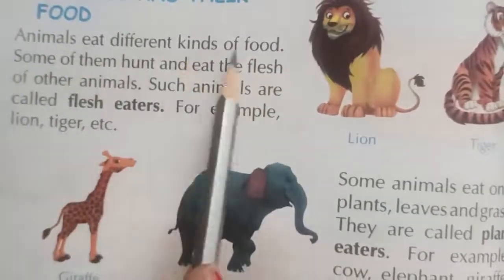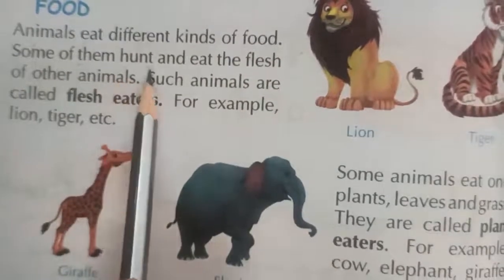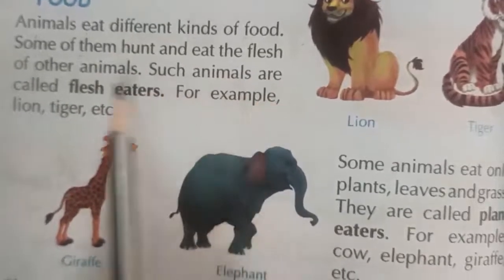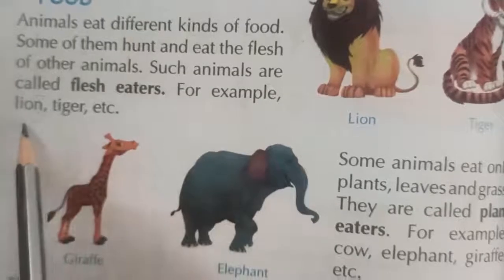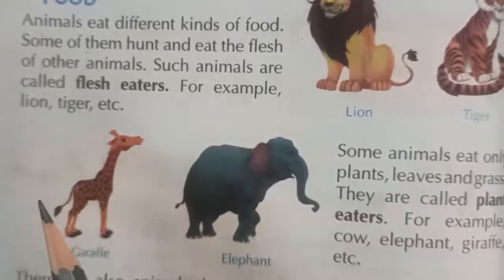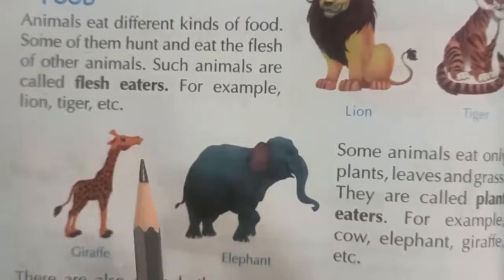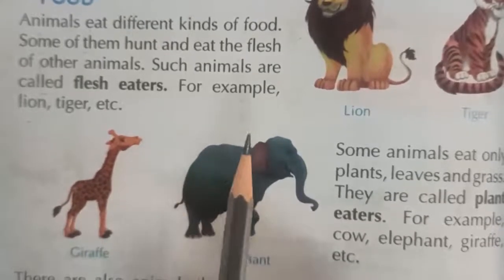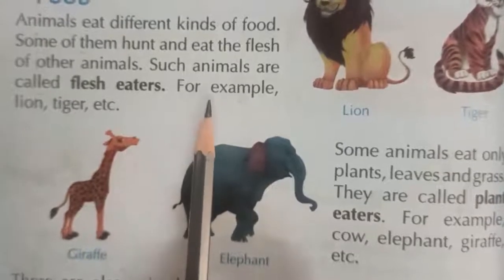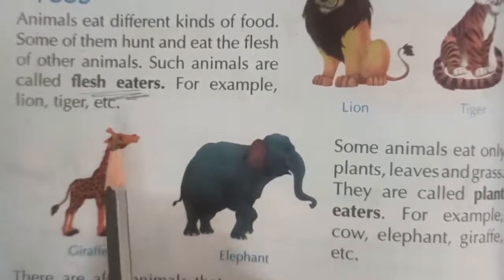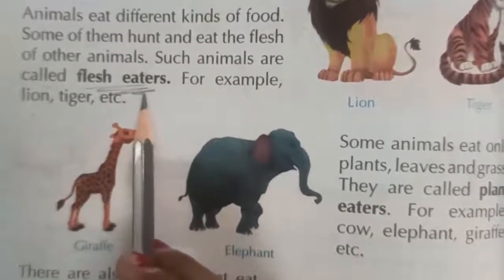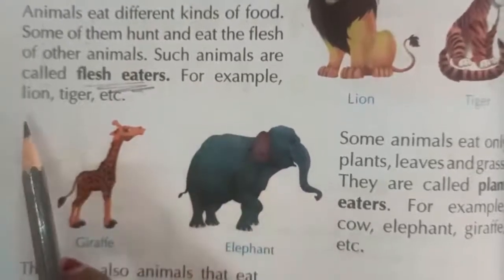Animals eat different kinds of food. Some of them hunt and eat the flesh of other animals — such animals are called flesh eaters. For example, lion and tiger. Flesh eaters are those who hunt other animals and eat them.